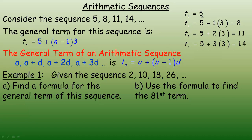Going back to the sequence example, it's always 1 less because the first term doesn't have any common differences added to it — the first term is just 5, that's where the sequence starts. Then we start adding 3s to the next term, the next term, and so on. That's the general term for any arithmetic sequence.